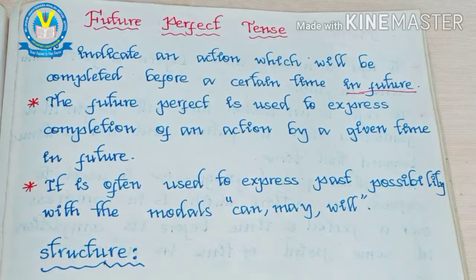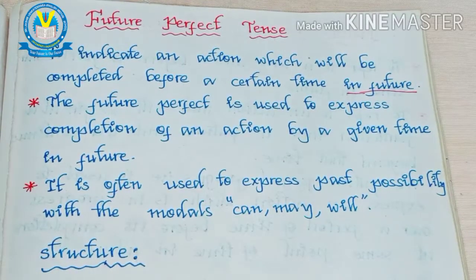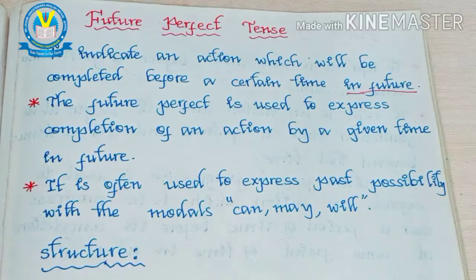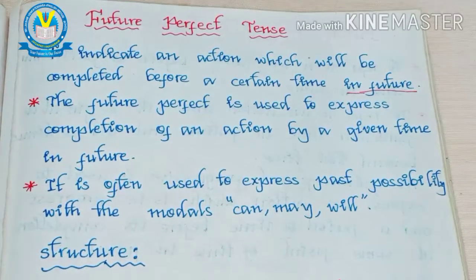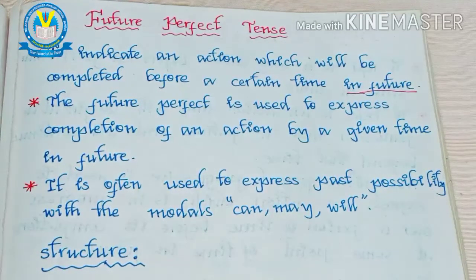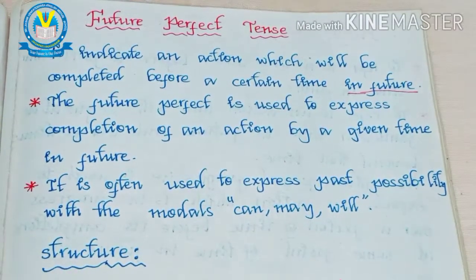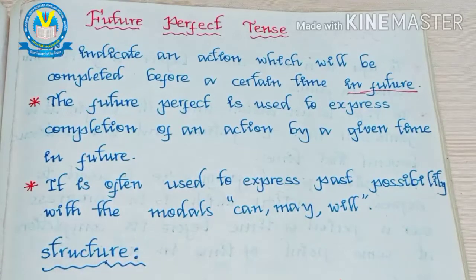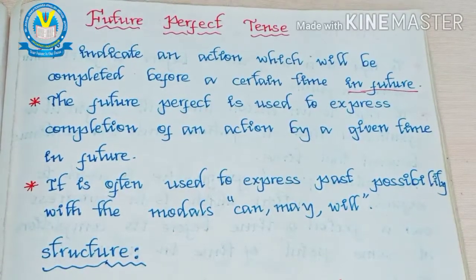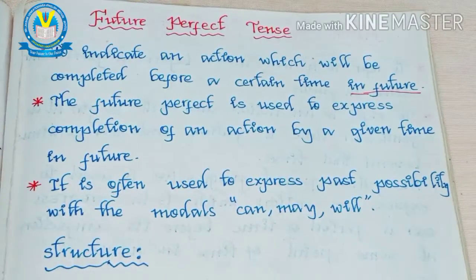Next year means future. But we know the particular date, right? Because your birthday falls on one specific day. So we know the future action, but it occurs on a particular time and a particular day. We call this the future perfect tense.